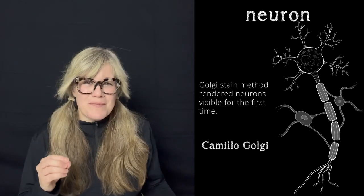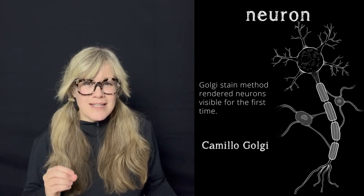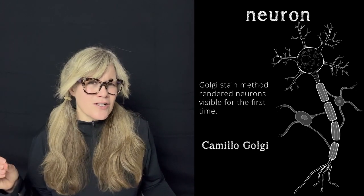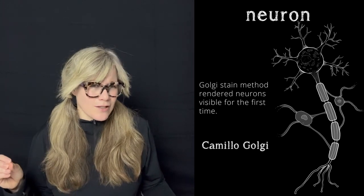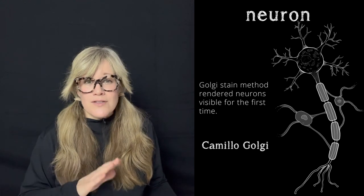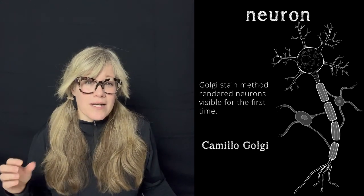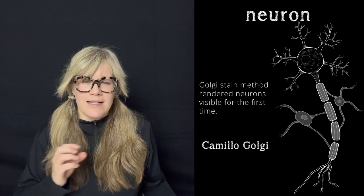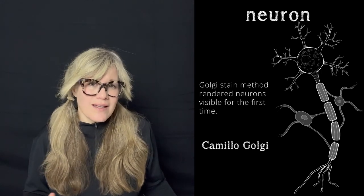Though Golgi made these really important discoveries, he also championed a theory about how neurons function that didn't pan out to be accurate. He believed that neurons fuse together to form a kind of net of nerves that operated as one whole unit rather than each individual neuron operating on its own.